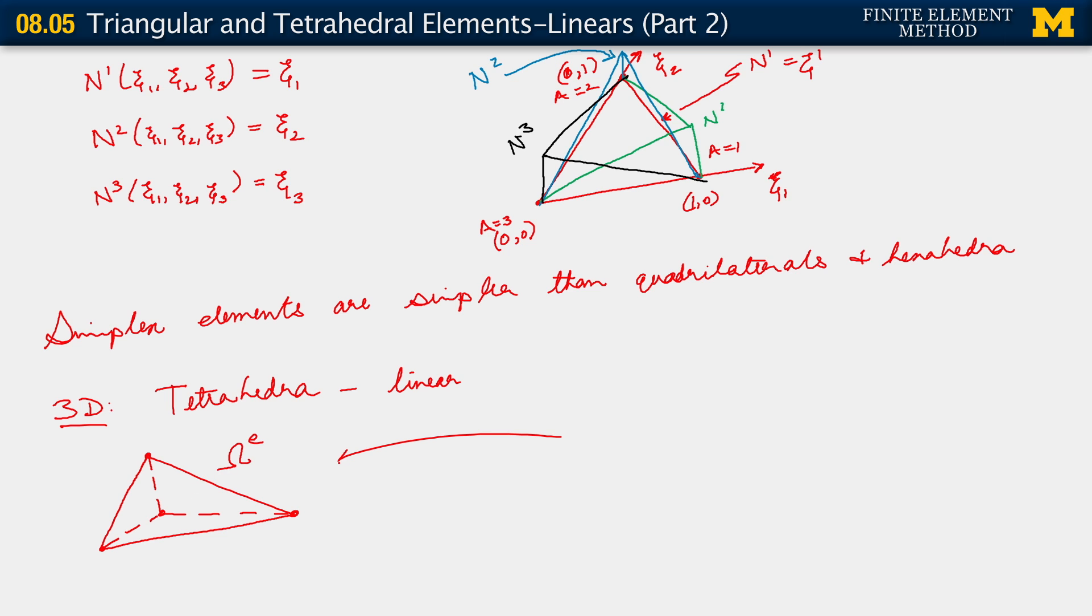I'm showing you the simplest linear tetrahedron. So this would be our omega e. And it would be constructed, as you may imagine, from a parent domain in 3D.